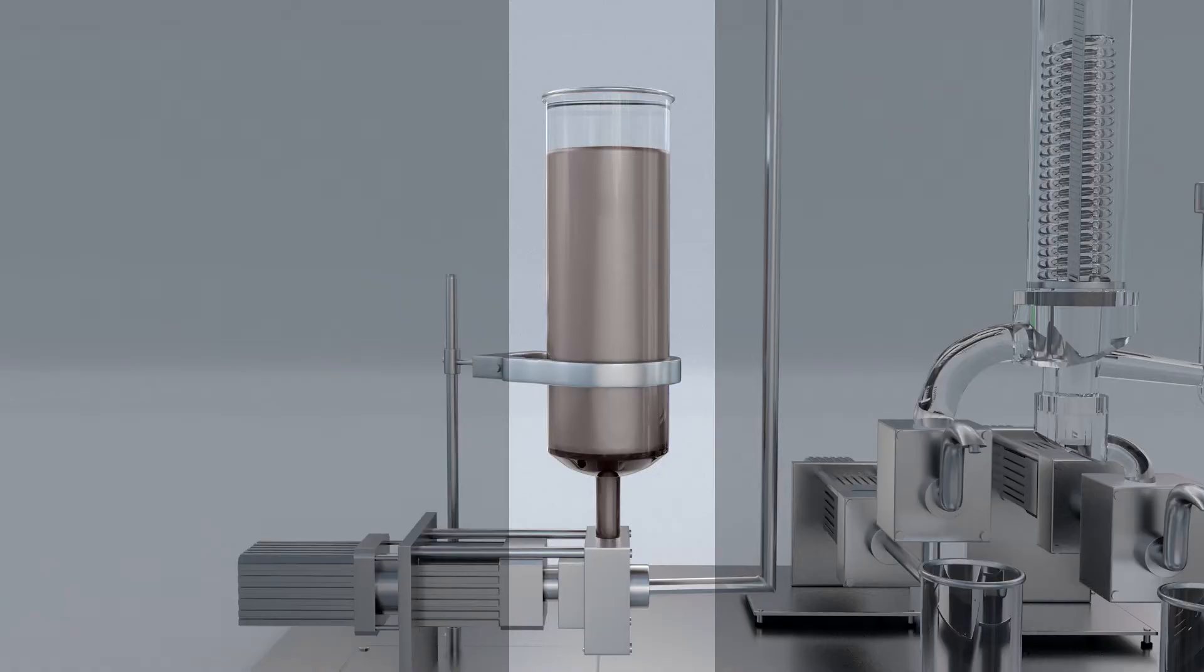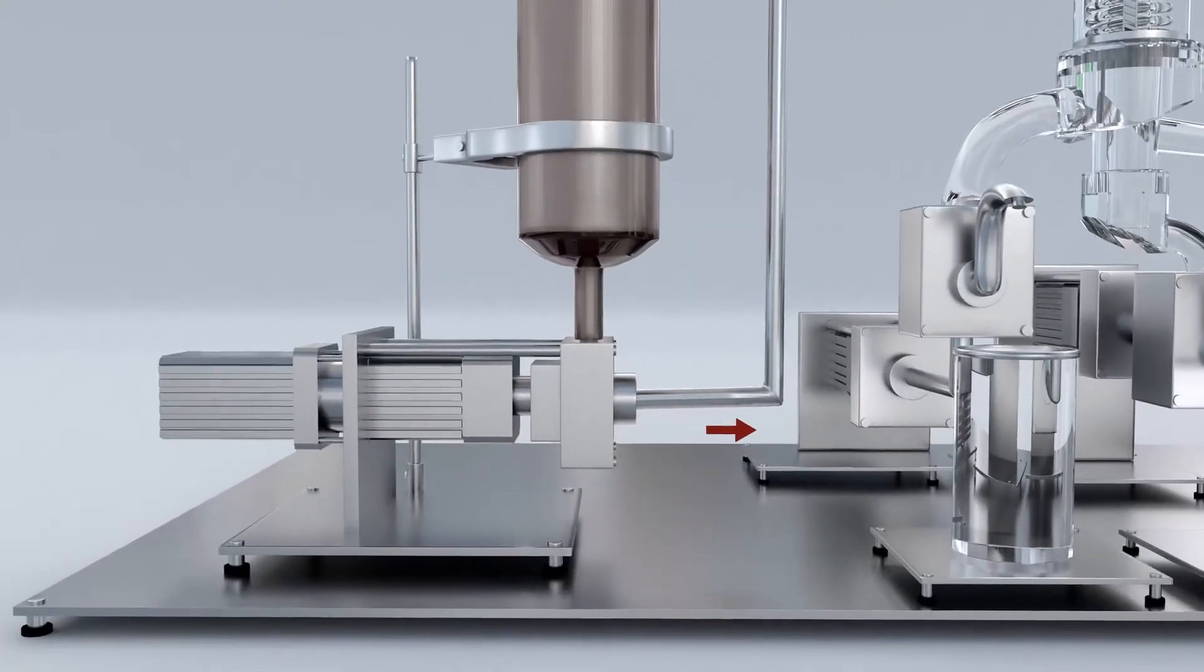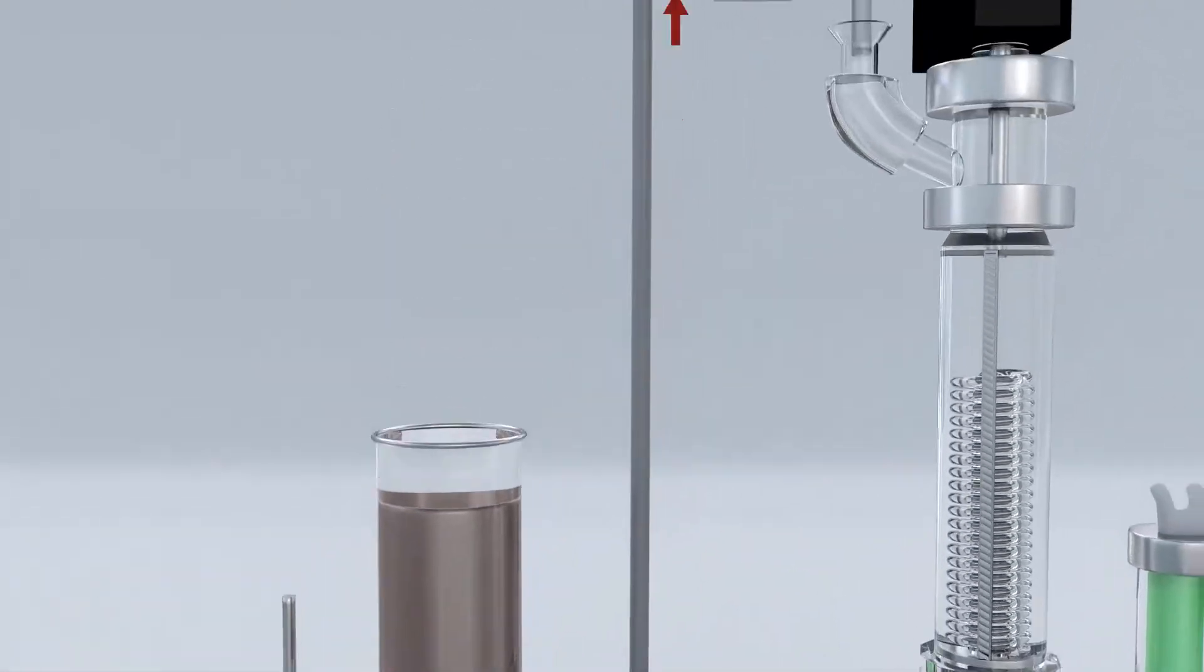Because crude oil is very viscous at room temperature, it is first warmed to a liquid state in the feed tank. This oil is then pumped up through the feed tube into the main evaporation chamber.